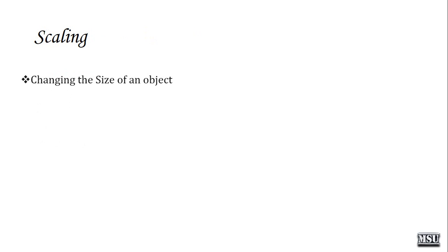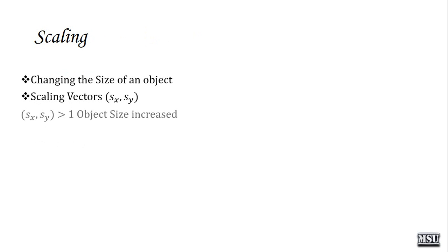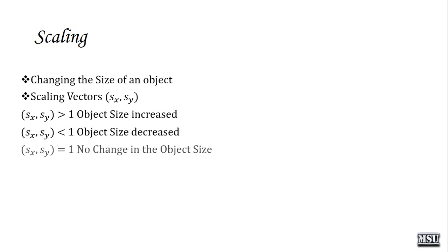Now we are going to discuss about scaling. Changing the size of an object is defined as scaling. You can increase the size or you can decrease the size. To perform scaling, we need scaling vectors SX and SY. If the scaling vector values are greater than 1, then the object size is increased. If SX and SY values are less than 1, the object size is decreased. If it is equal to 1, then there will be no change in the object size.